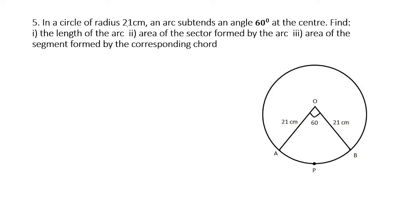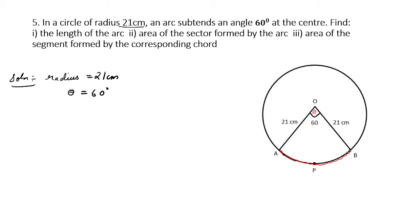Draw a circle of radius 21 cm. An arc subtends an angle of 60 degrees at the center — so from point A to point B on the circle is the arc, and from the center it subtends 60°. We're asked to find the length of the arc of the circle (not of a sector — be careful with that). Solution: radius = 21 cm, θ = 60°.